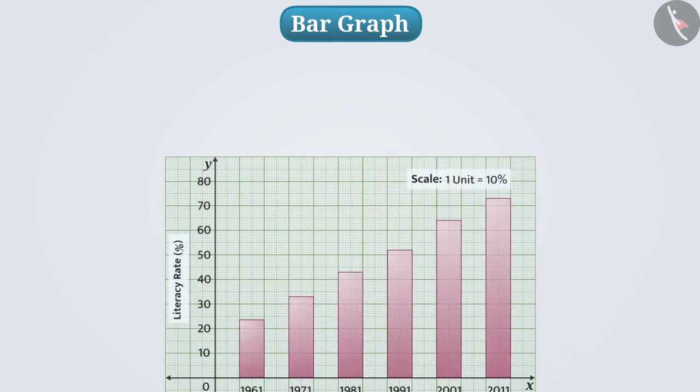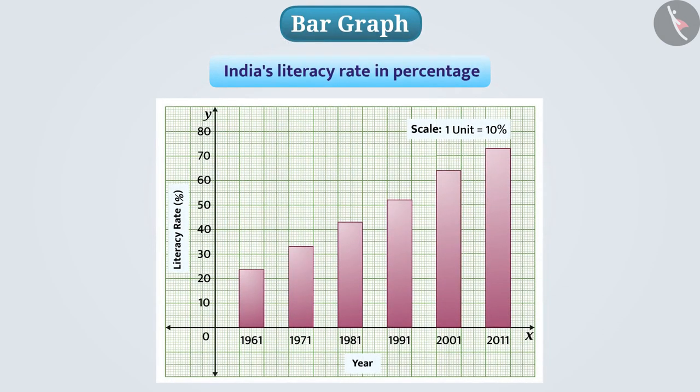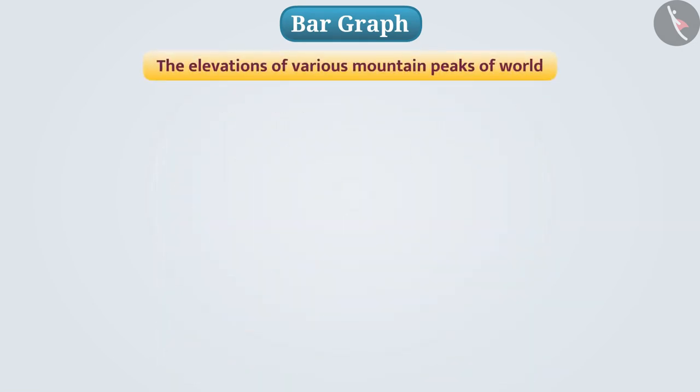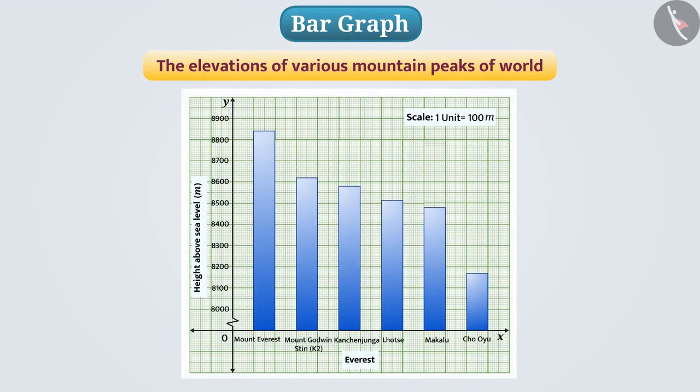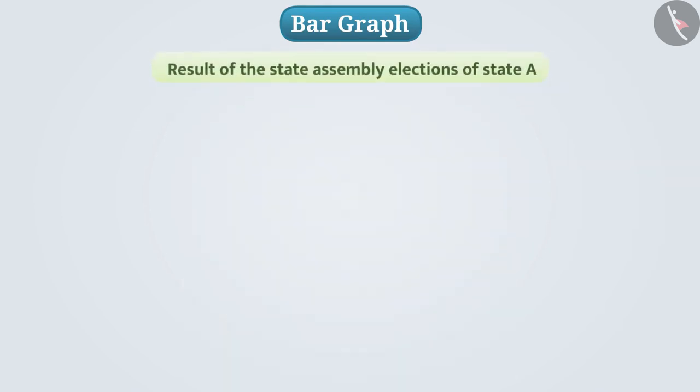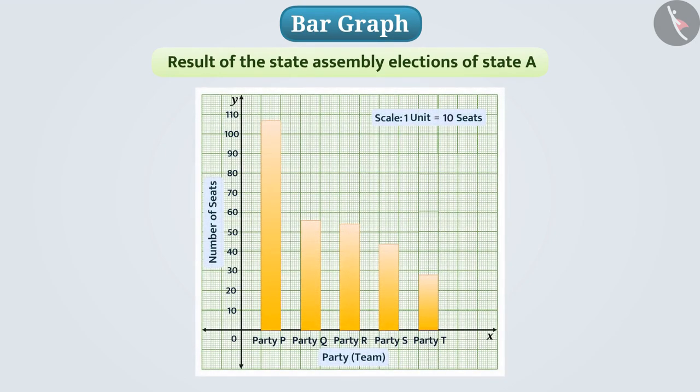Like here this represents India's literacy rate in percentage. Looking at this we can compare the literacy rate of given years. The elevations of various mountain peaks of the world are shown in this bar graph so that we can compare them. Similarly the result of the state assembly election of state A is shown in this bar graph. Looking at this we can compare the seats won by different parties.